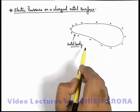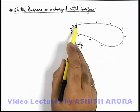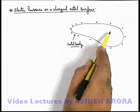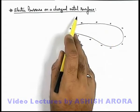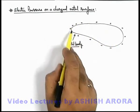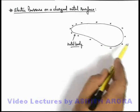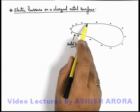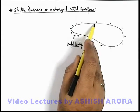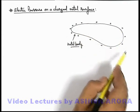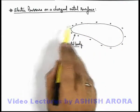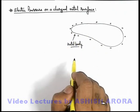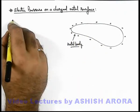In this situation we can say every charge on the surface is being repelled by the remaining charges of the body in the outward direction, because we know that the electric field always exists in the direction perpendicular or normal to the surface. So every portion of this metal body will experience an outward electric pressure due to the mutual repulsion of charges. This pressure we call electric pressure.